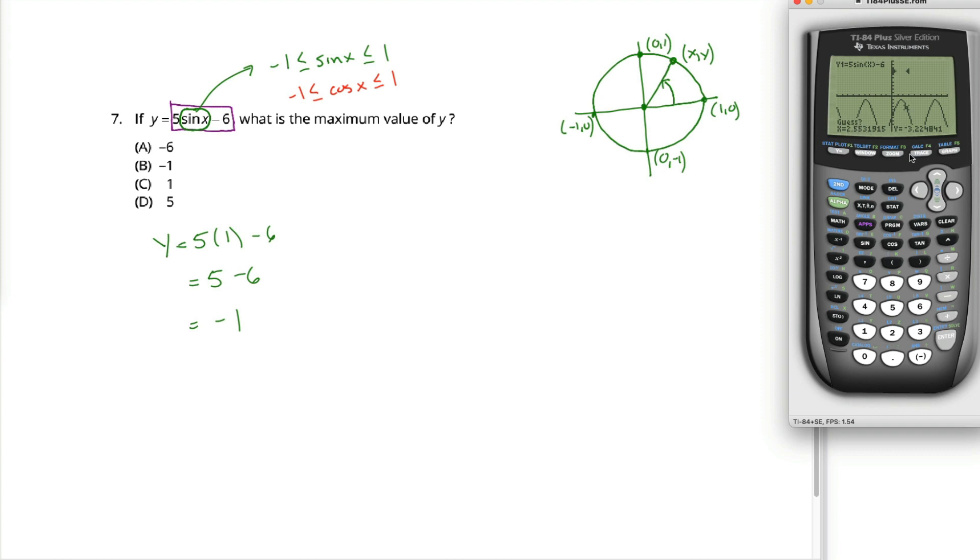Then it asks me to guess. That's because it uses this different algorithm and it needs a starting point for the algorithm. So I move the cursor somewhere towards the top of the hill here. Hit enter, it does a little bit of calculation, and it tells me the X and Y coordinates corresponding with this maximum. I want to know the maximum value of Y. Maximum value of Y is negative 1.